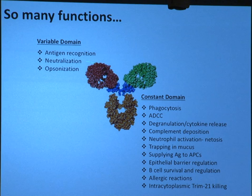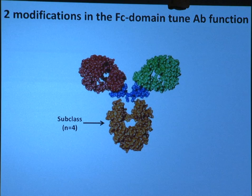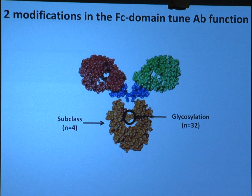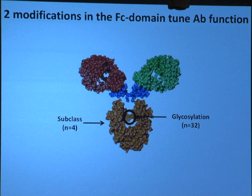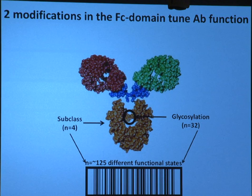We also make a second modification through a change of a sugar lodged between the arms of the antibody — glycosylation — where we can choose up to 35 different structures, 32 of which are common. These different glycan structures tune the affinity of antibodies to different types of innate immune receptors. With four subclasses and 32 different glycan structures, that gives a theoretical range of about 125 different functional flavors on an antibody — really the immunological barcode the immune system uses to direct different kinds of innate immune function.